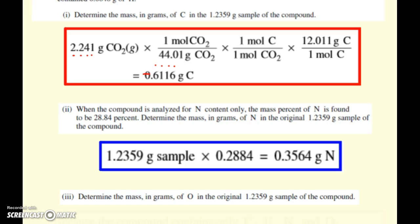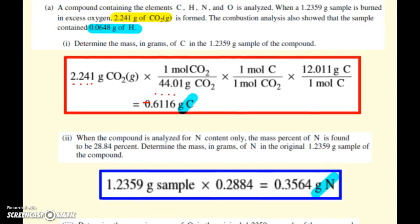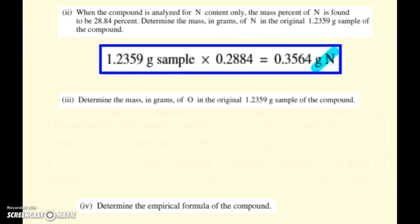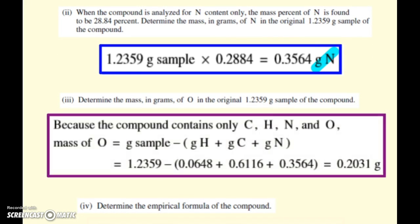Now, it says, determine the mass in grams of oxygen in the compound. Well, we just figured out the mass of carbon and the mass of nitrogen, and they gave us the mass of hydrogen. So we know three of the four masses. Alright, so yes, again, ding, ding, ding, just that simple. The mass of oxygen, you have your sample, 1.2359, and you subtract out the other three, hydrogen, carbon, and nitrogen. And so there we have our grams of oxygen.